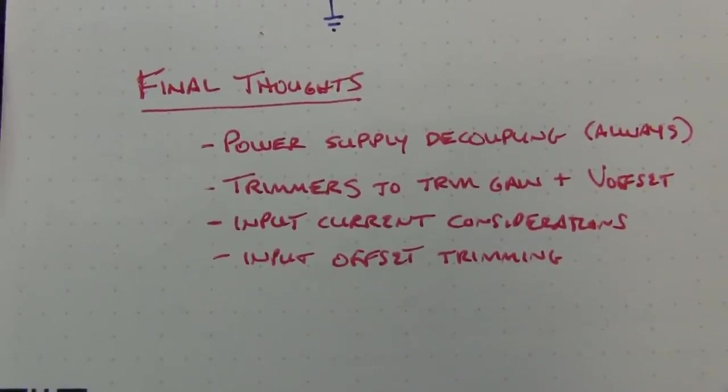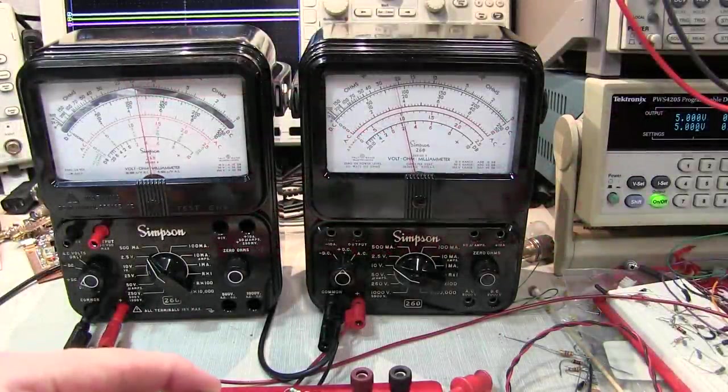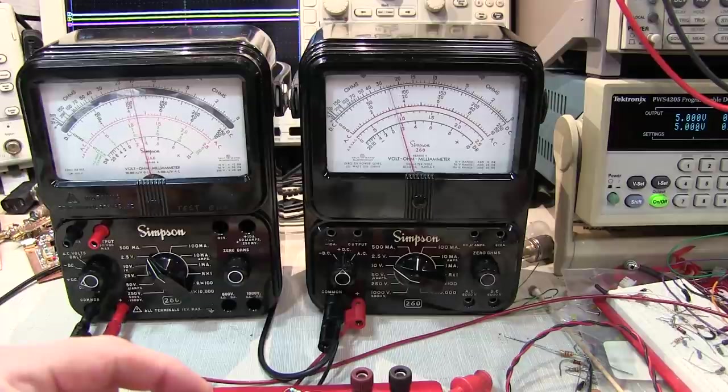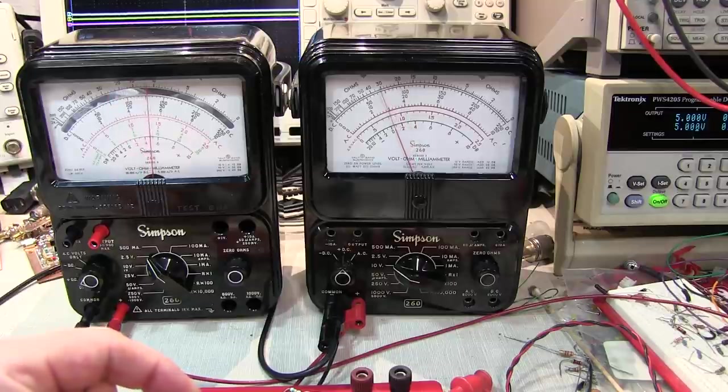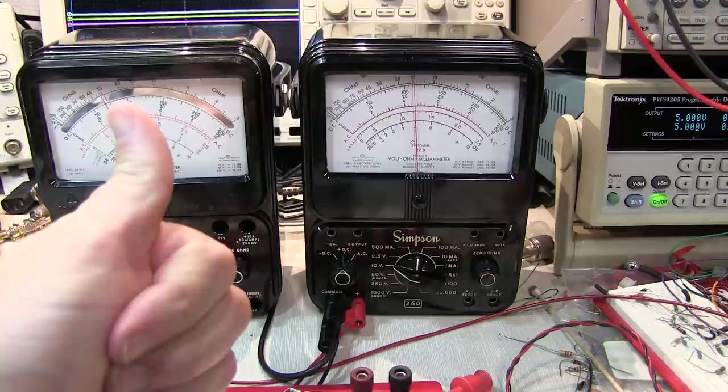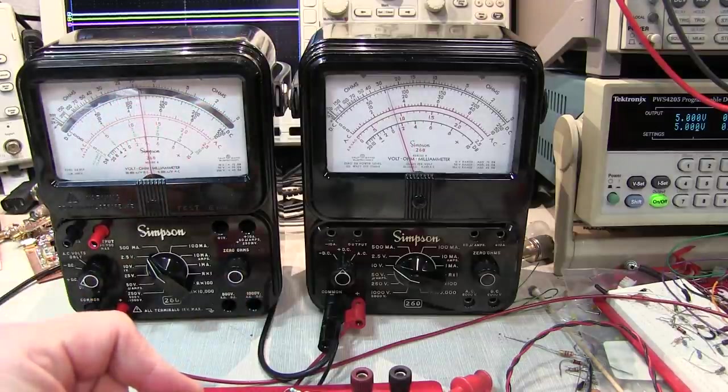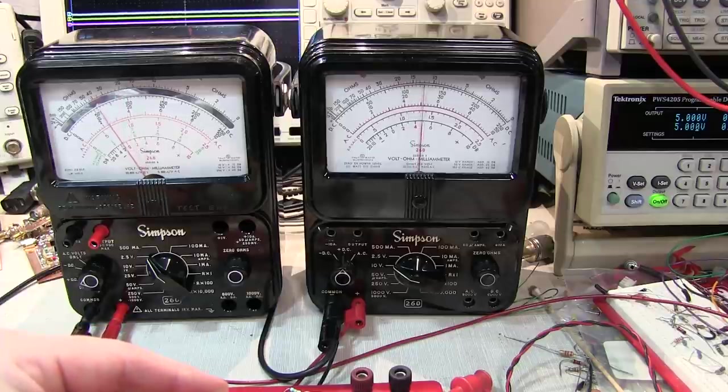I hope this video taught you a little something about the practical application of op amps to do some basic signal conditioning to change a sensor voltage from the range that it produces to something that you might want for your follow-on circuits. If you liked the video, give me a thumbs up. If you haven't subscribed to the channel already, please consider doing so. And thanks again, as always, for watching.